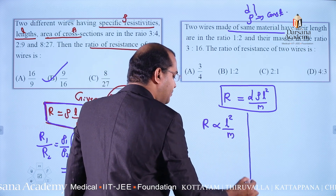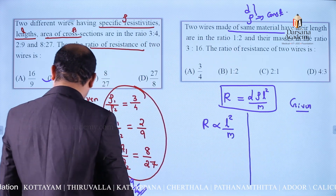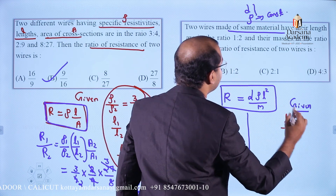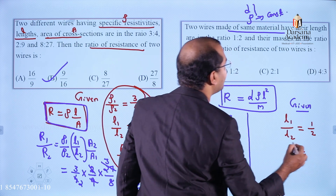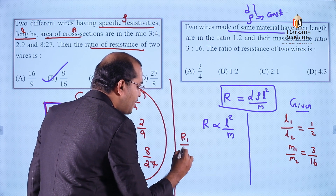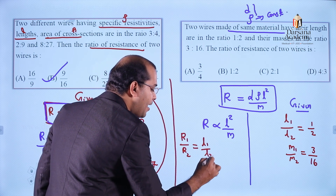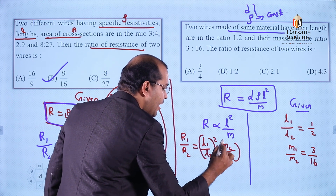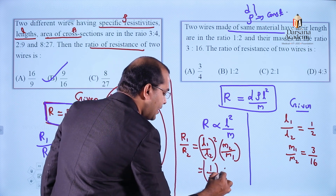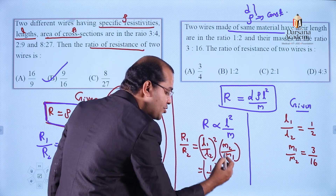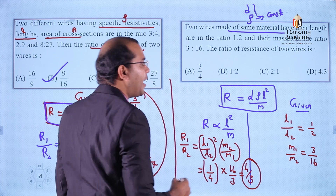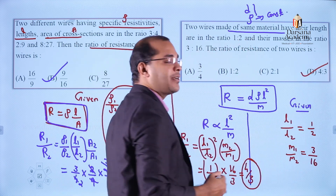So the ratio R1/R2 equals (L1/L2)² × (M2/M1). Substituting: (1/2)² equals 1/4, and M2/M1 equals 16/3. So R1/R2 equals (1/4) × (16/3) equals 16/12, which simplifies to 4/3. So the ratio is 4:3, and the correct option is option D.